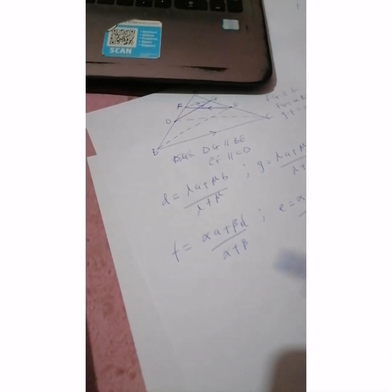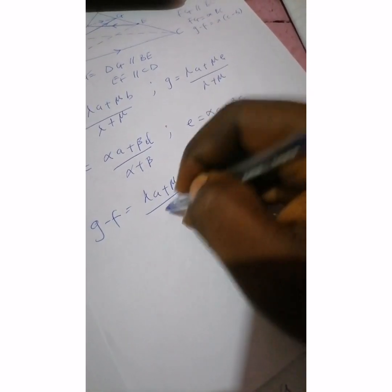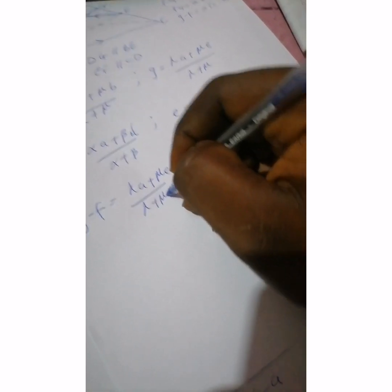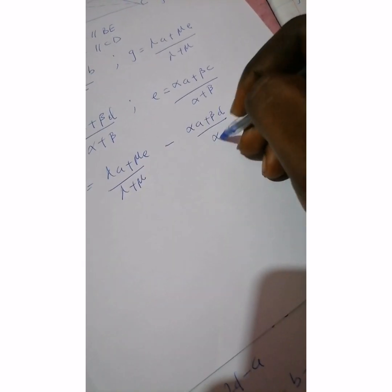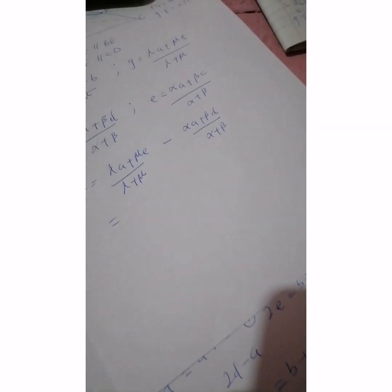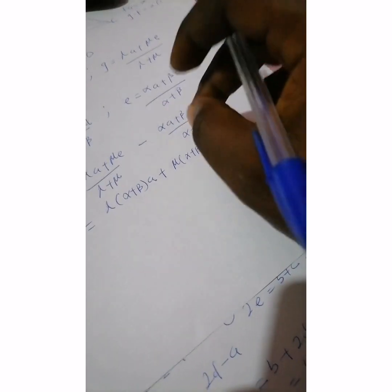Now we have four expressions. To prove FJ is parallel to BC, we want to show FJ equals some scalar times (C − B). So let's find J minus F. J minus F equals (λA + μE)/(λ + μ) minus (αA + βD)/(α + β). We now need to expand and simplify this carefully.